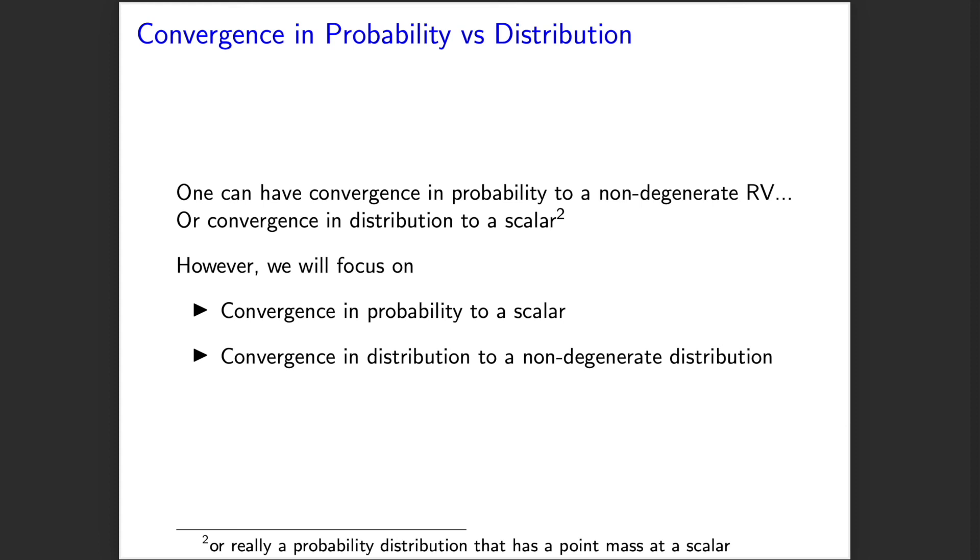This discussion of convergence in distribution will be extremely important when we think about the central limit theorem, which is a very canonical result in asymptotic statistics, and which we then use in many different ways to think about sampling distributions, p-values, confidence intervals, etc., as we move forward in a lot of different regimes.